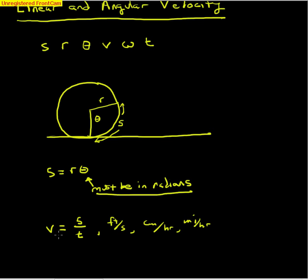The linear velocity is v, which will be s over t. S is our arc length as before, and t is time. So the units you'll see for v would be something like feet per second, centimeters per hour, meters per hour, miles per hour, and so on.